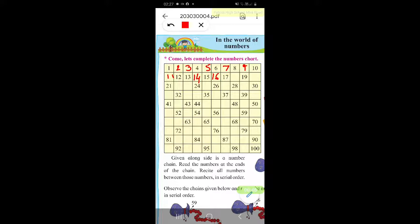Seventeen, eighteen, nineteen, twenty, twenty-one, twenty-two, twenty-three, twenty-four, twenty-five, twenty-six, twenty-seven, twenty-eight, twenty-nine, thirty, thirty-one, thirty-two, thirty-three, thirty-four.